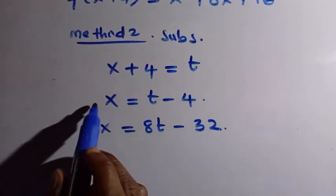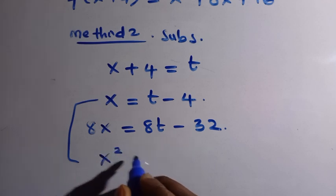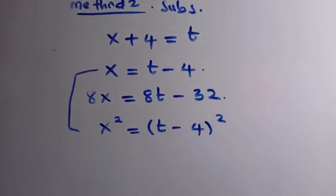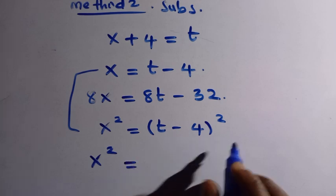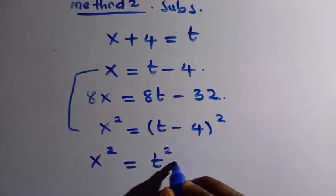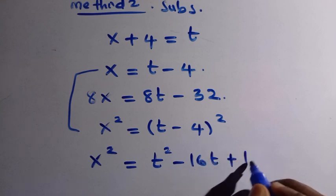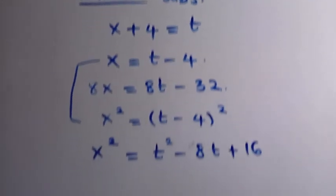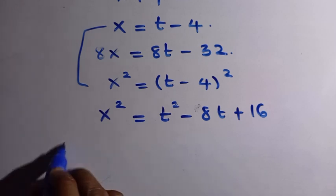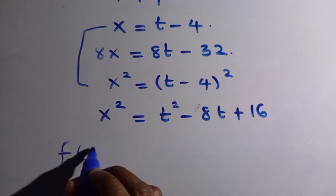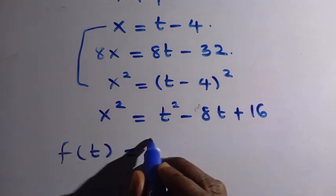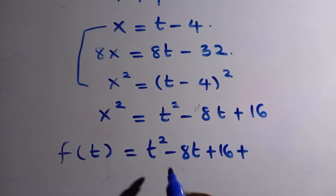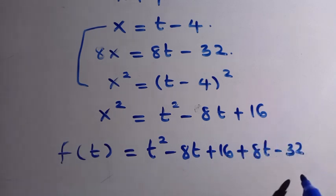We also need x squared. Squaring x equals t minus 4 gives x squared equals (t minus 4) squared, which expands to t squared minus 8t plus 16. Since we changed x plus 4 to t, we have f of t equals (t squared minus 8t plus 16) plus (8t minus 32) plus 16.